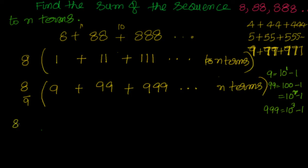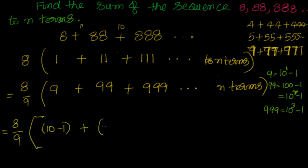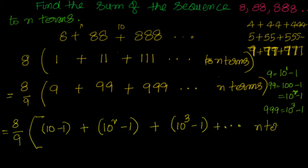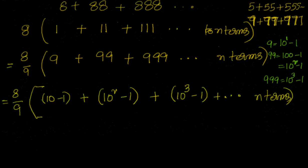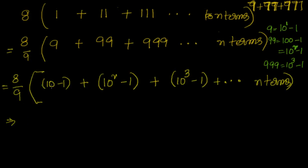Now I can manipulate it and say this is nothing but equal to 8 by 9 into: (10 minus 1) plus (10 squared minus 1) plus (10 cubed minus 1), continuing to n terms. You can see very clearly there is a geometric progression — 10, 10 squared, 10 cubed is a geometric progression.